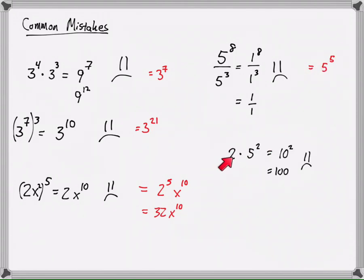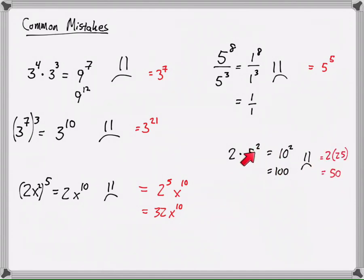Another common mistake: students will multiply 2 times 5, multiply the bases, then take the exponent — like 2 times 5 is 10, then square it to get 100. There's an order of operations that says we need to do our exponents first and then multiply. These are some of the most common mistakes I tend to see, though there are more.